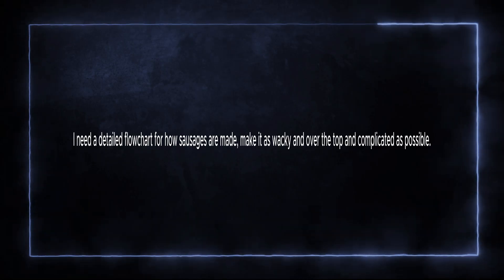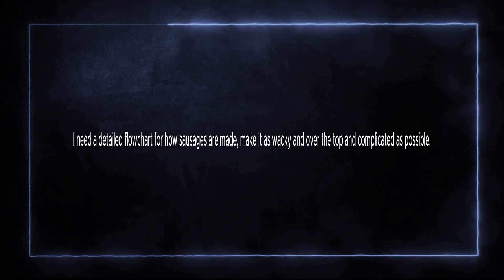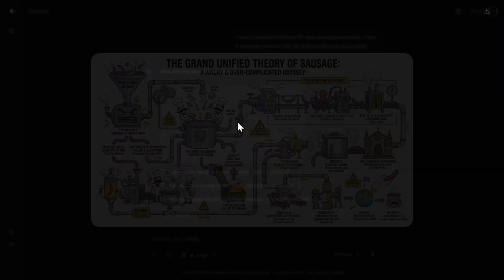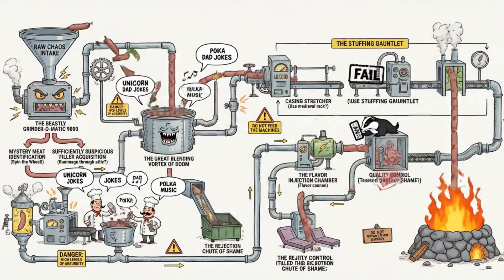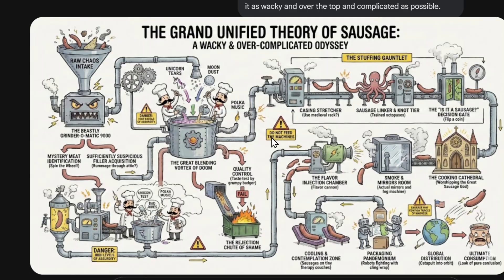Then something completely different. I need a detailed flow chart for how sausages are made - make this as wacky and over-the-top complicated as possible. Here is the final image. Look at how good that looks: 'The Grand Unified Theory of Sausage - A Wacky and Overcomplicated Odyssey.' We have trained octopuses, a medieval rack. This looks very, very interesting. It would look even more interesting put into Google Veo 3.